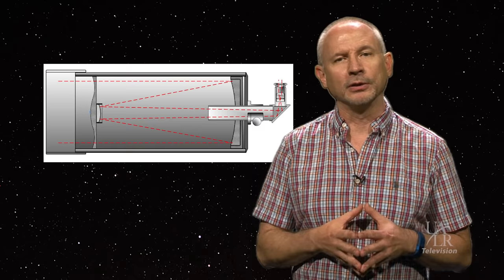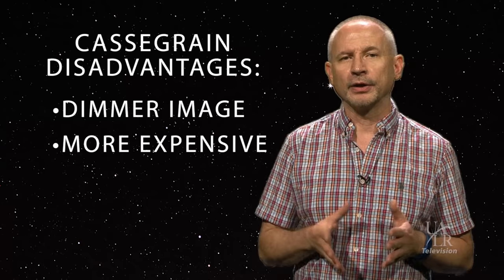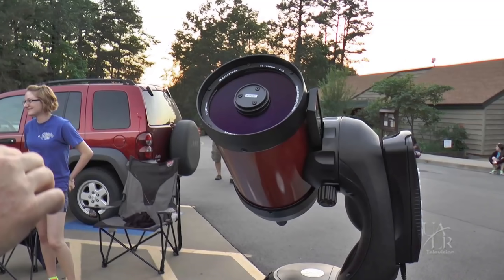The downside is that this folded pathway for the light results in some of the light being lost before it gets to your eye, and the image is much dimmer than in either a refractor or a reflector. Also, these kinds of telescopes are more expensive than a good Newtonian, but not nearly as much as they would be for a large refractor. A good basic catadioptric starts out at around $600 or $700 and then goes up from there.